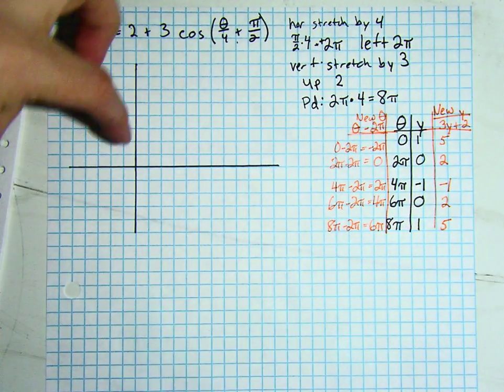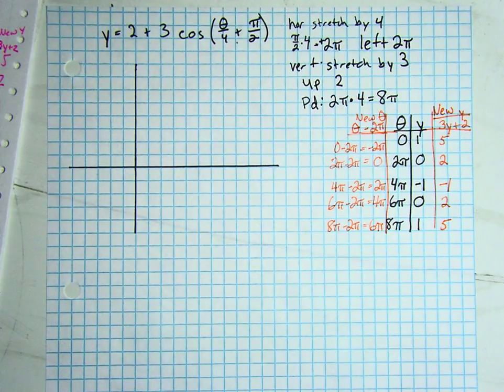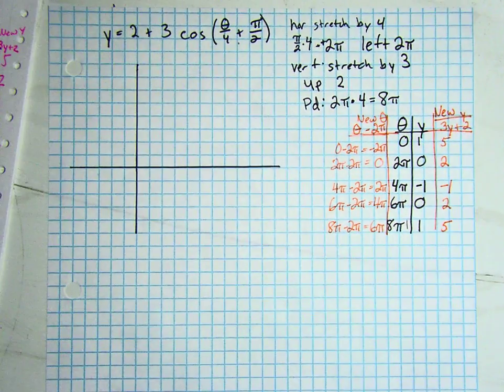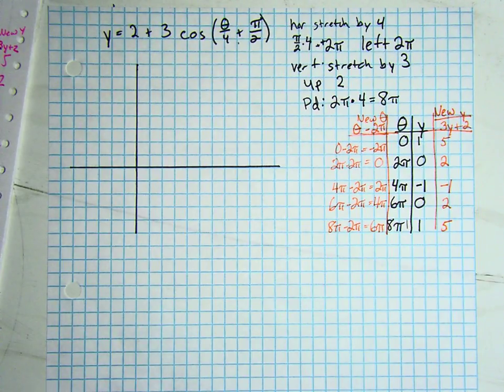I am now ready to go graph my final answer. I am going to go ahead and go back to my original theta so that I can mark my coordinate plane off in the units to start with. So I'm going to go out to 8 pi.